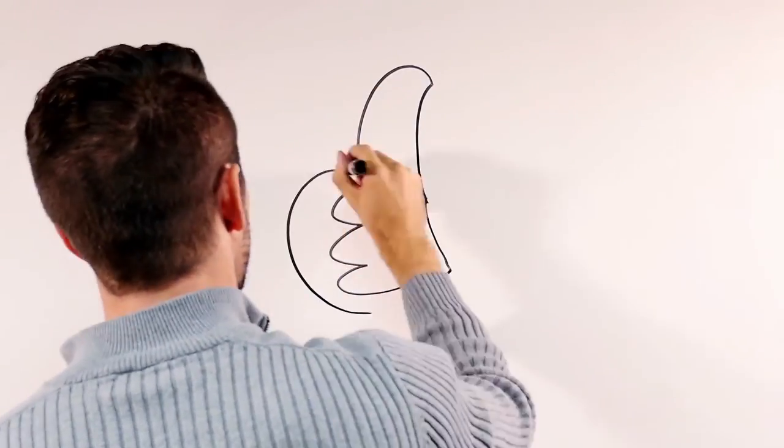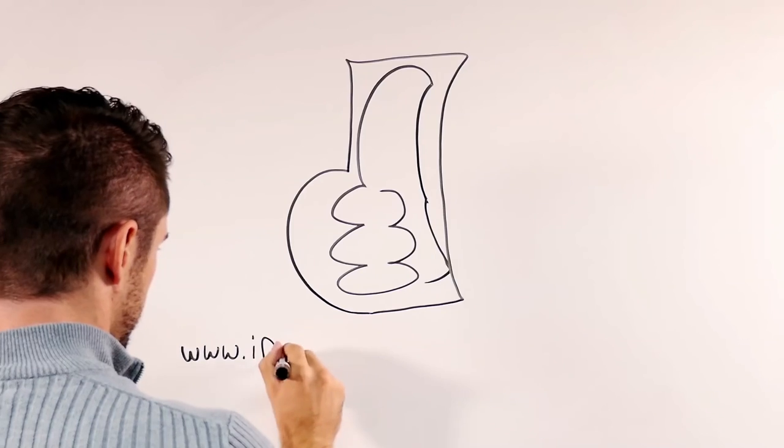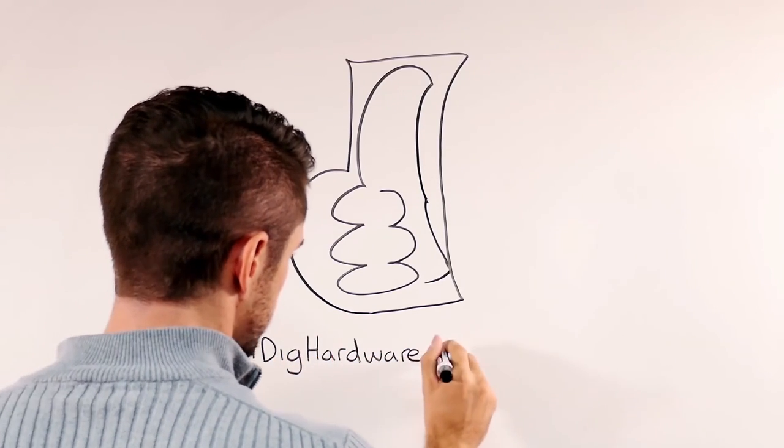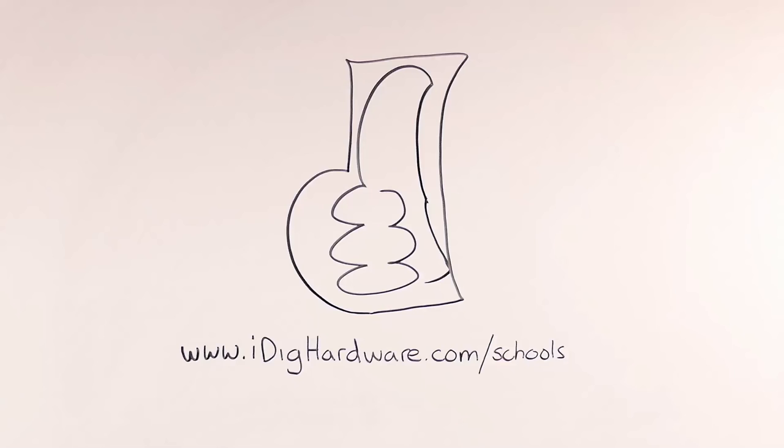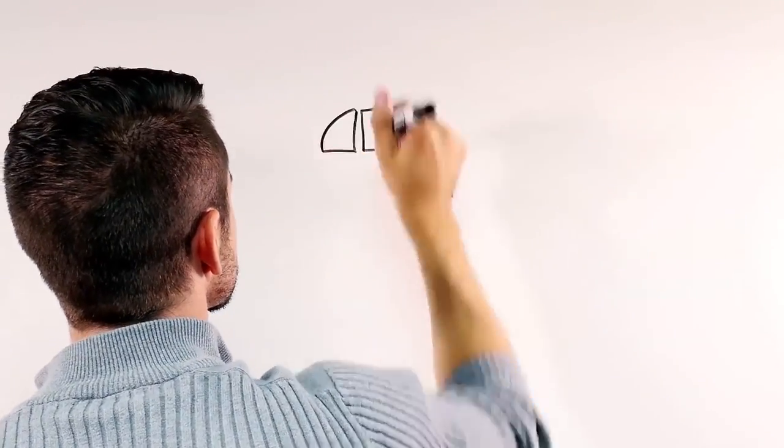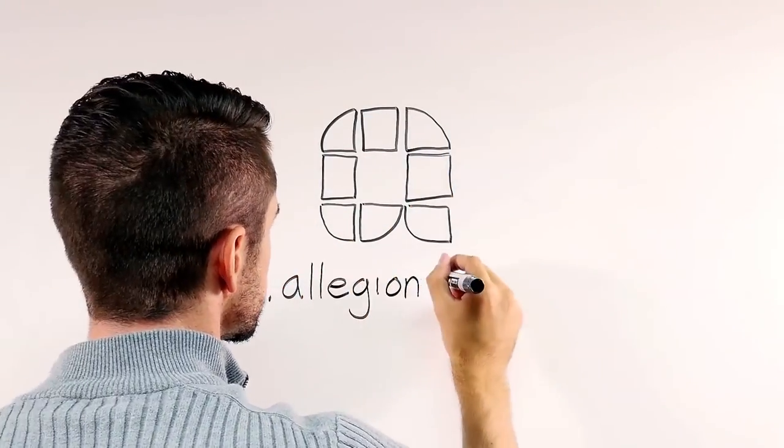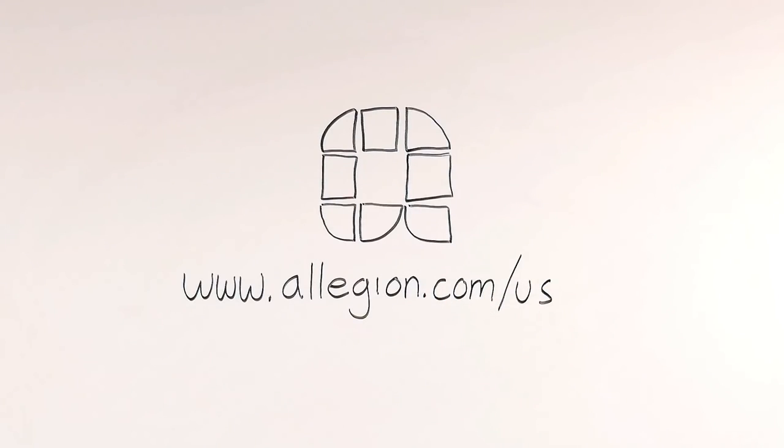For more information on classroom door locks and other school security topics, visit www.idighardware.com/schools. While the recommendations described in this video meet the NASFM guidelines, as always, check your local and state building codes and the authority having jurisdiction for the requirements in your locality. To watch more videos, visit our training page at www.idighardware.com/us.